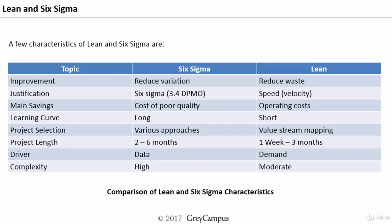The justification for taking up a Six Sigma project is the reduced rejection rate — around only 3.4 defects per million opportunities — whereas the justification for doing a Lean project is speed. The turnaround time is going to be faster, so the speed is going to increase. That is the reason why we take up Lean projects.